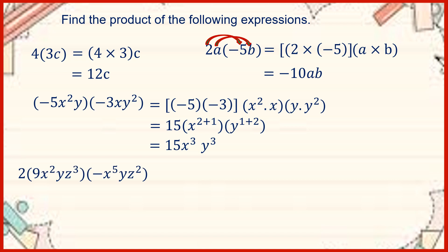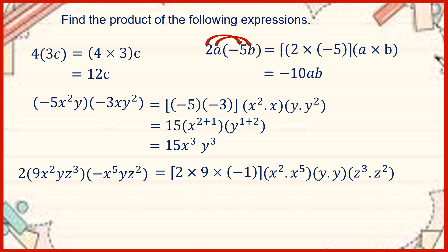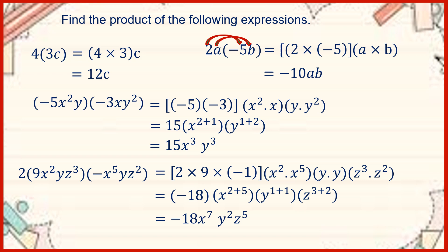Now let us have another one: 2 times 9x squared y z to the third times negative x to the fifth y z to the second. We are going to have 2 times 9 times negative 1 — remember that any variable without a coefficient means it is equal to 1, so negative x means negative 1. Then x squared times x to the fifth, y times y, z to the third times z to the second. Multiplying further, we get negative 18 times x raised to 2 plus 5, y raised to 1 plus 1, z raised to 3 plus 2. Simplifying, we get negative 18x to the seventh, y to the second, z to the fifth.